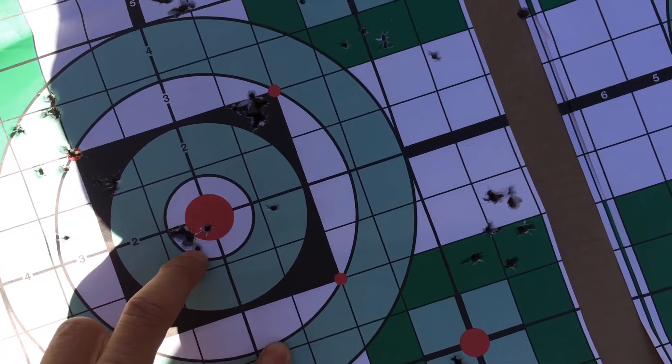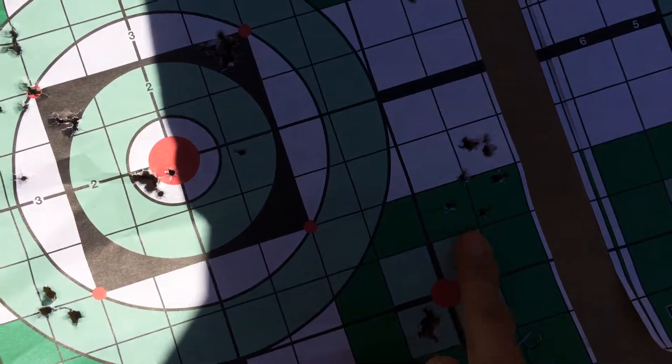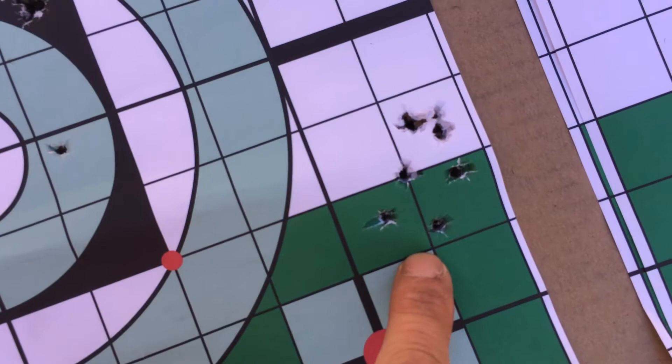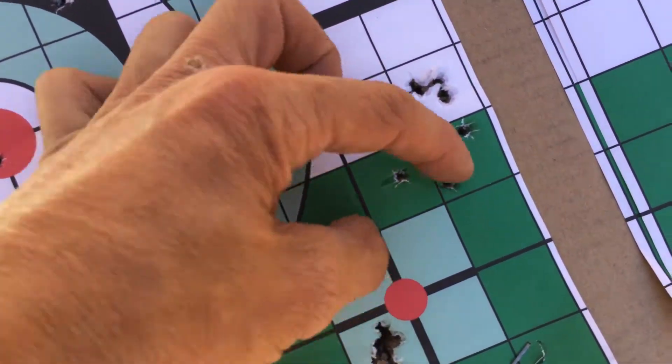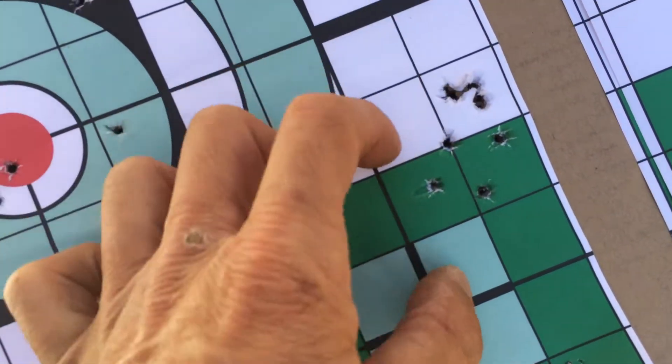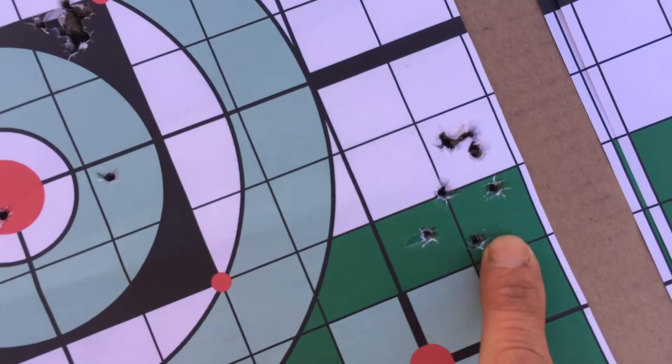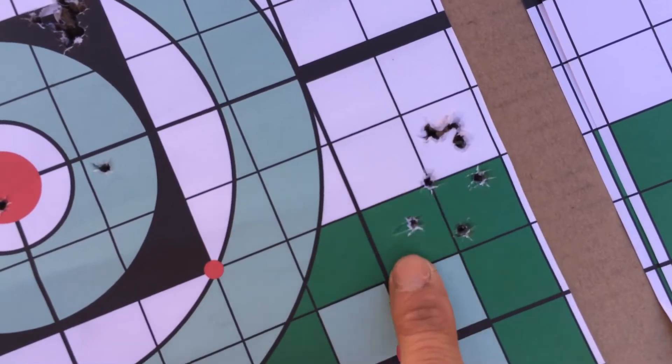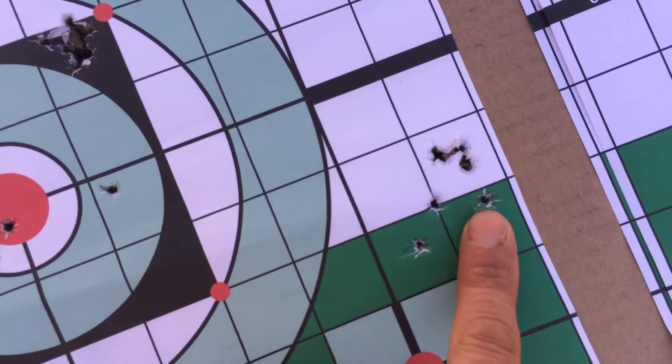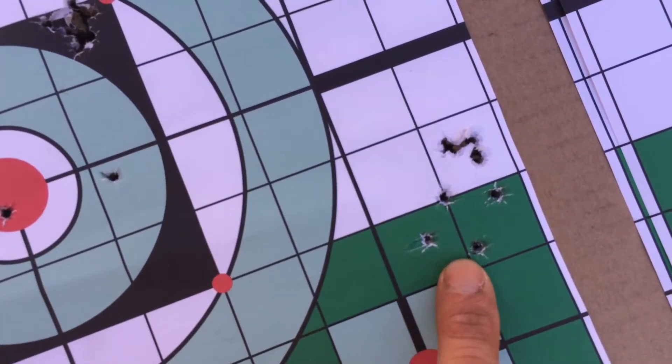I shot four different pellets. First one right here is this group. Each of these squares is about an inch, I believe. So this is the first group. This is the Benjamin Domes .25 caliber, so that's 27 something grains. Benjamin Domes.